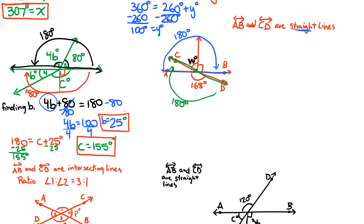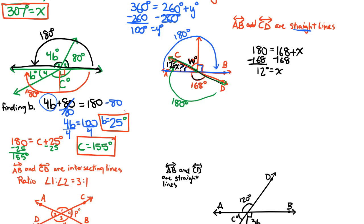Can we use line AB? We know this is 90 degrees, and we know w, but we don't know the third angle — so we're stuck there. Let's use line CD instead. We know this is 168 degrees, and since there are only two angles, they add up to 180 degrees. So 180 = 168 + x. What do we need to add to 168 to get 180? Subtracting 168, we get x = 12 degrees.